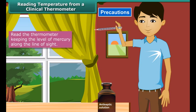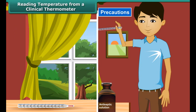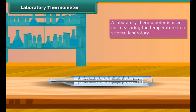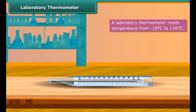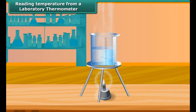Precautions to be observed while reading a clinical thermometer are as follows: thermometers should be washed before and after use, preferably with an antiseptic solution. Ensure the mercury level is below 95°F. Read the thermometer keeping the level of mercury along the line of sight. Handle the thermometer with care — if it hits against a hard object, it can break. Do not hold the thermometer by the bulb while reading it.